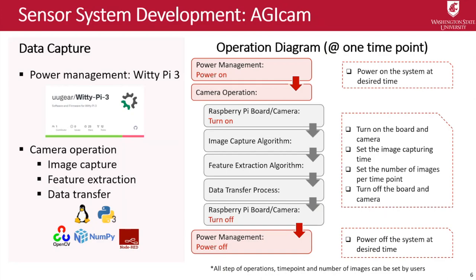We have different algorithms to make our camera operate automatically in the field. We have an algorithm to control the camera to capture images automatically. We also have an algorithm to automatically extract features — the features we're talking about are vegetation indices (VI) such as NDVI and green DVI.